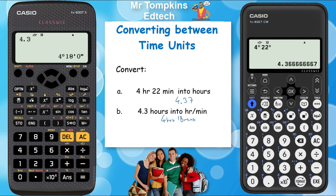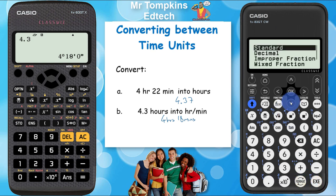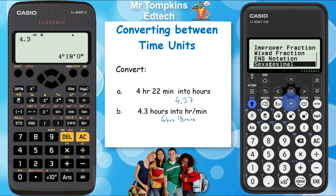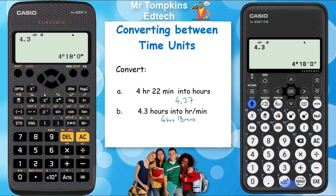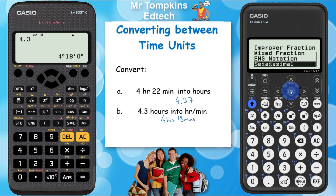On the new calculator, the process is similar. I'm going to press 4.3 and then press the execute button. This time I'm going to press the format key and go down to sexagesimal mode — interesting name. Just a note that you can get there a little bit quicker if you press the format key and press up, because it's the last one on the list. And that gives you 4 hours 18 minutes, as before.